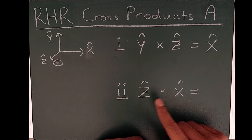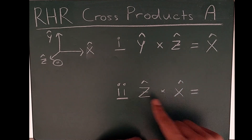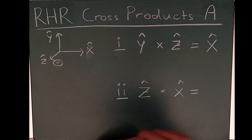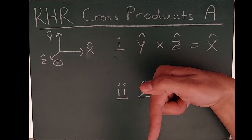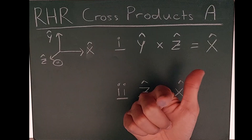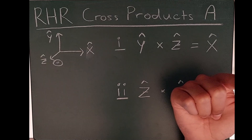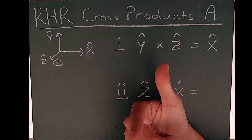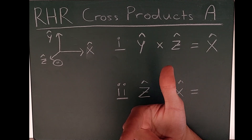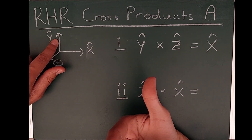Another example: Z hat cross X hat. Z hat is the first vector, coming out of the page, and X hat points to the right as the second vector. I point my index finger out of the page for Z hat, then point my middle finger to the right for X hat. My thumb ends up pointing north — in the direction of Y hat. So Z hat cross X hat equals Y hat.